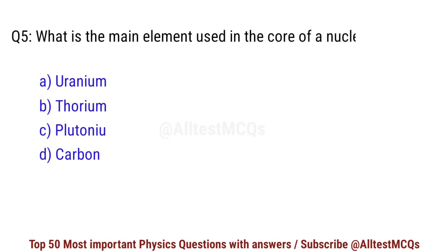Question No. 5. What is the main element used in the core of a nuclear reactor? Right option is A. Uranium.